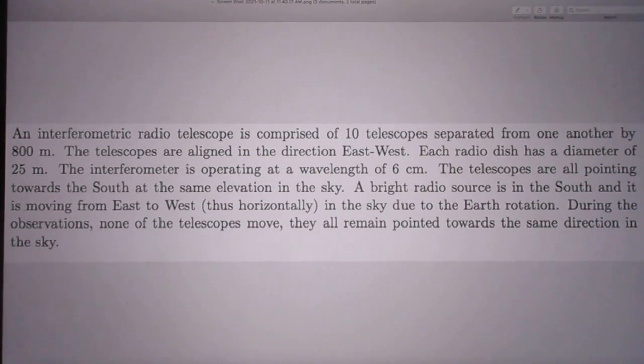This is physics problem number 121. An interferometric radio telescope is comprised of 10 telescopes separated from one another by 800 meters. The telescopes are aligned in the direction east-west. Each radio disc has a diameter of 25 meters. The interferometer is operating at a wavelength of 6 centimeters.